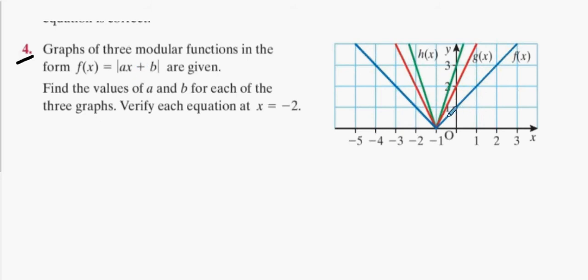Now, we discussed on Friday that the slope is a good indicator of what the a value is, didn't we? What's the slope of this one here, the blue one? That would be f of x equals the modulus of one x, or just x on its own, plus b equal to something. Pick a point and test the point.